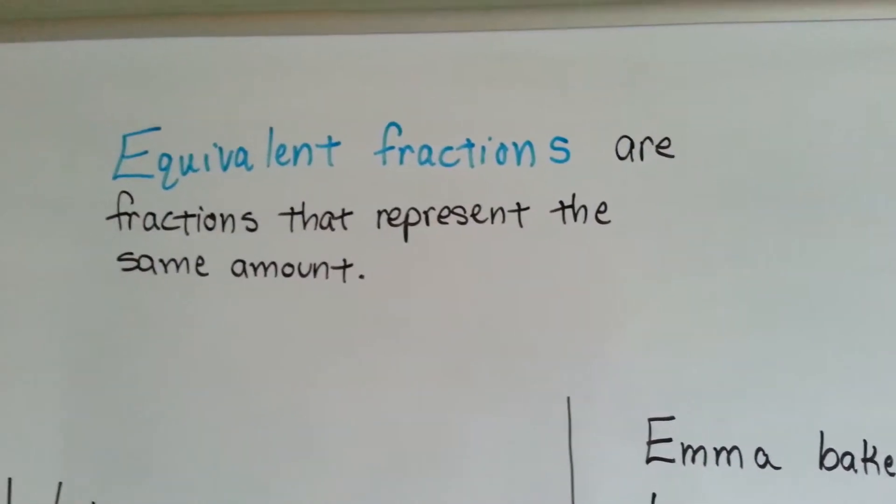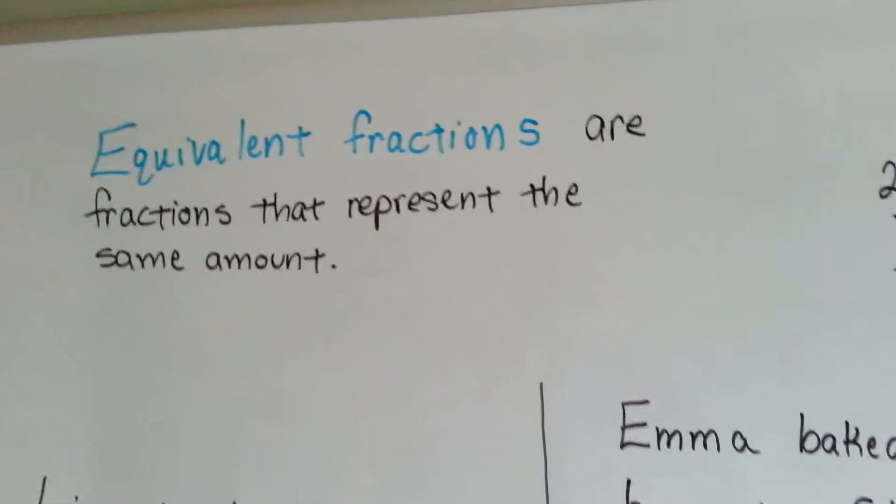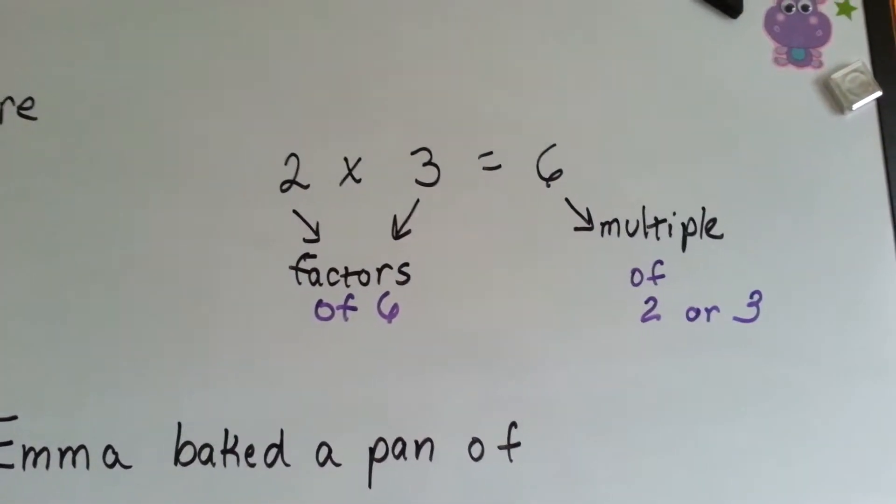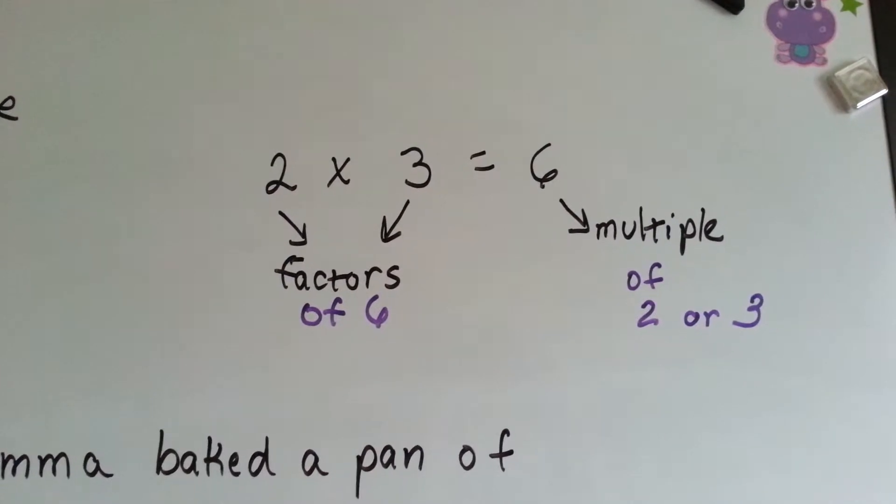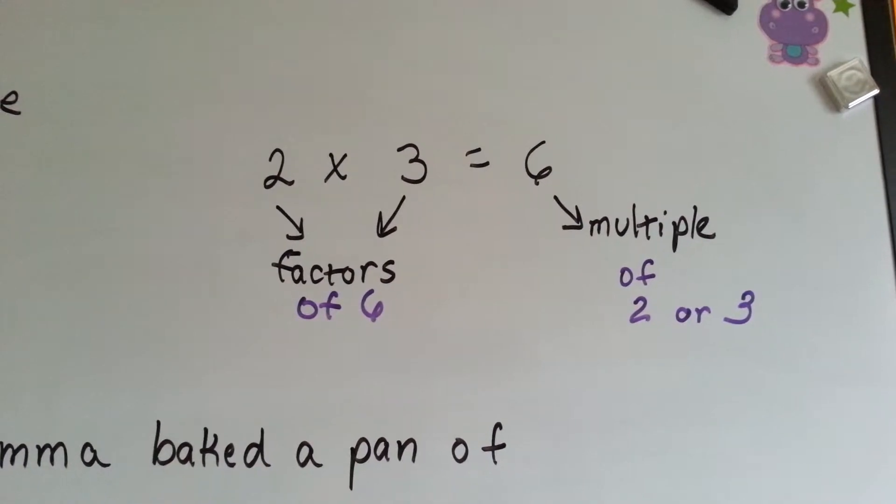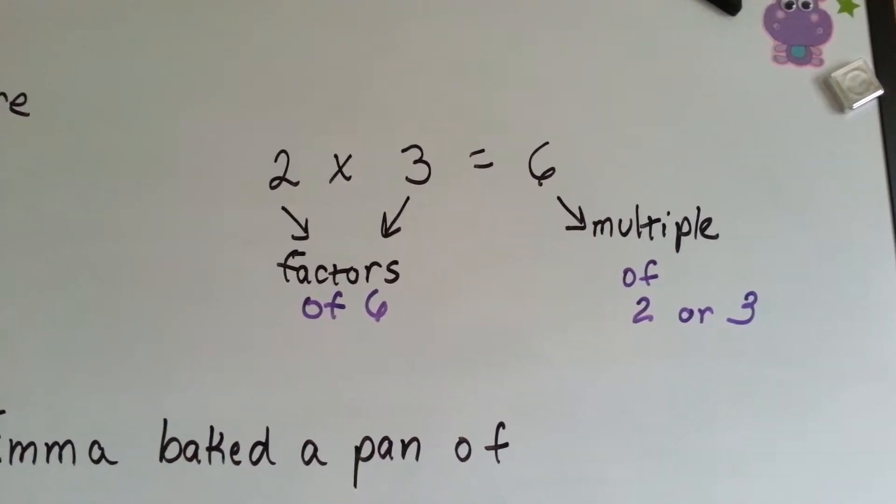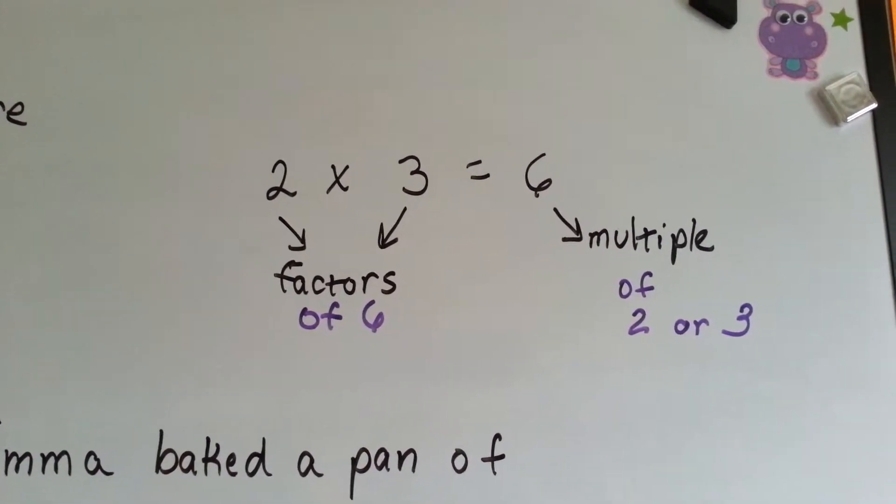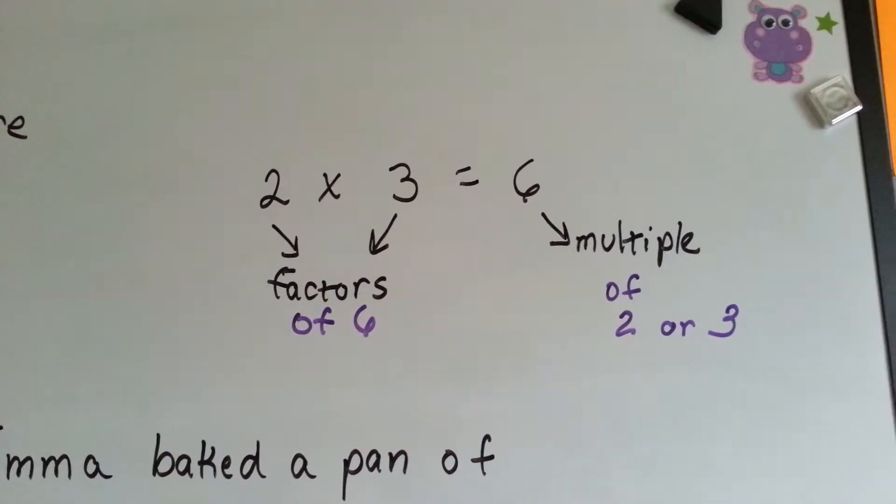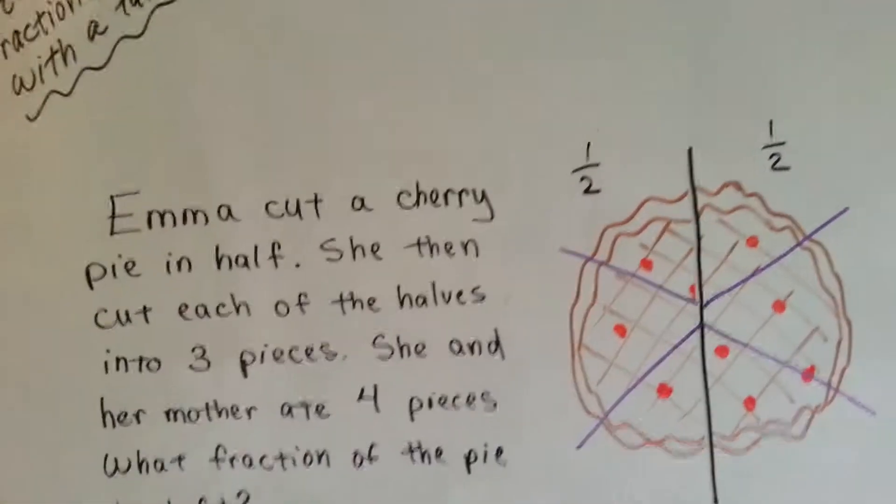It's like one-half and two-fourths. It's the same quantity being represented. I want you to also remember that when you have an equation like this, the two and the three are the factors of six, and six is the multiple of two or three. The factors make up the multiplication problem. The six is the multiple. It's the answer. So, knowing that, let's take a look at what Emma's up to.